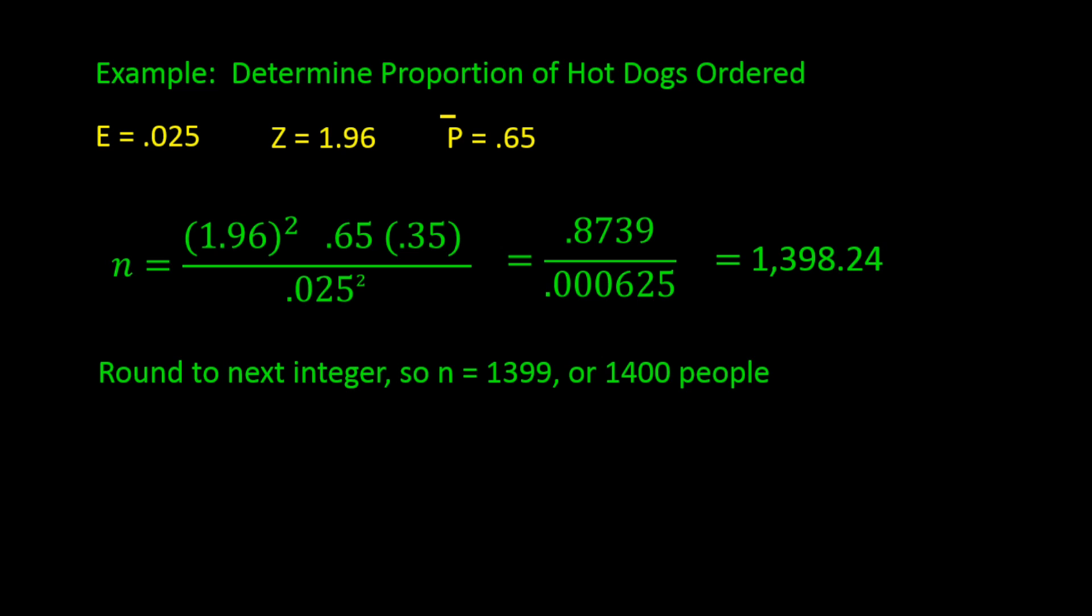So to get sample results that we can be 95% confident in with a 0.025 margin of error, we would need to sample 1,400 people. If we are willing to increase the margin of error, then we could reduce the sample size. It is always a trade-off.